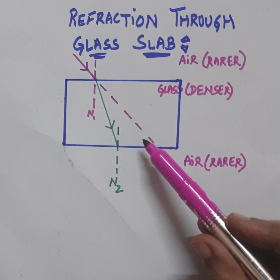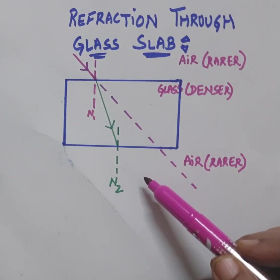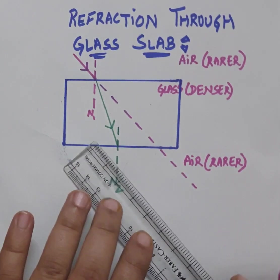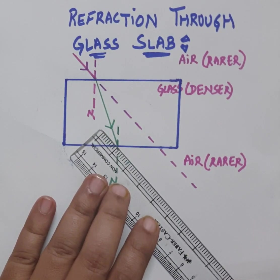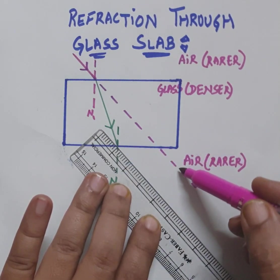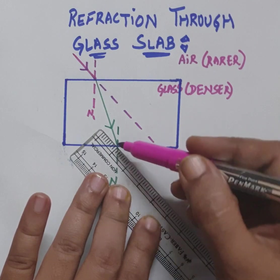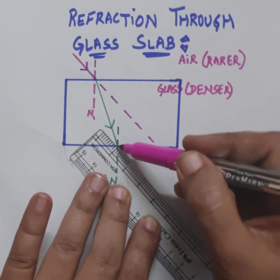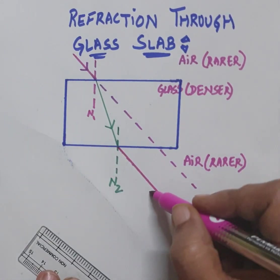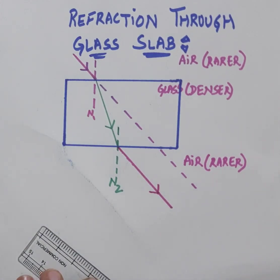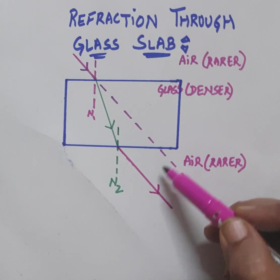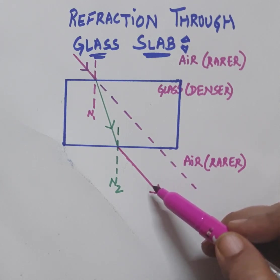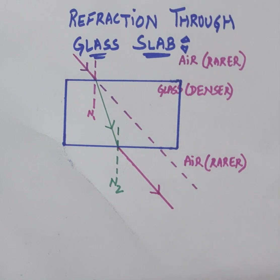As it is moving from denser to rarer medium, it will bend away from the normal. We draw a ray moving away from the normal, but we must take care that the ray we are drawing should be parallel to this incident ray — the dotted line. We must ensure this line is parallel to the incident ray while drawing it away from the normal.